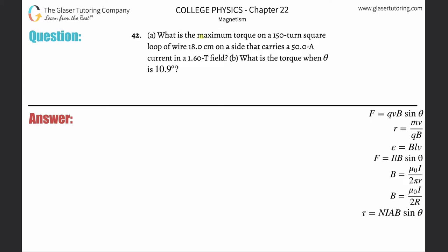Number 42 letter a: What is the maximum torque on a 150 turn square loop of wire 18 centimeters on a side that carries a 50 amp current in a 1.6 tesla field? Okay, so anytime you start talking about torque and current and magnetic field and basically shapes and areas and the number of turns, you gotta be using this formula.